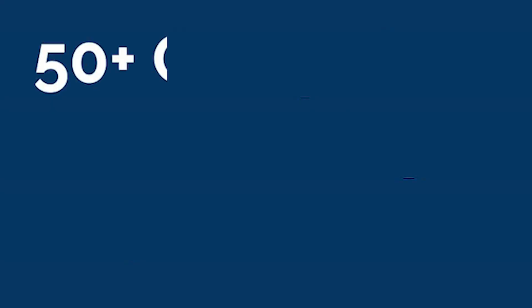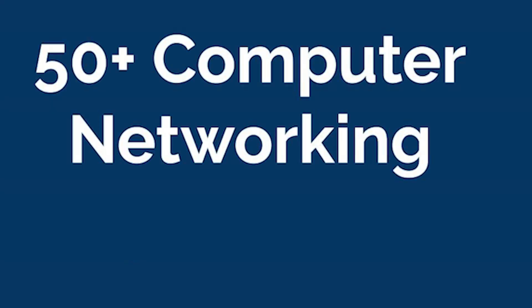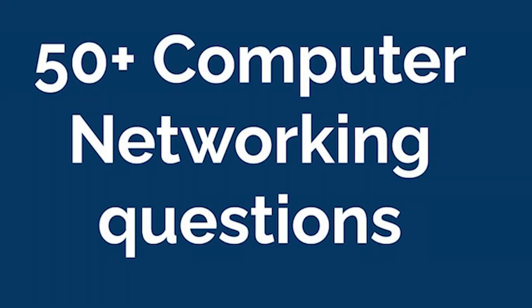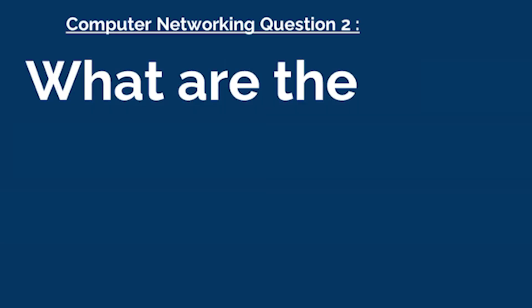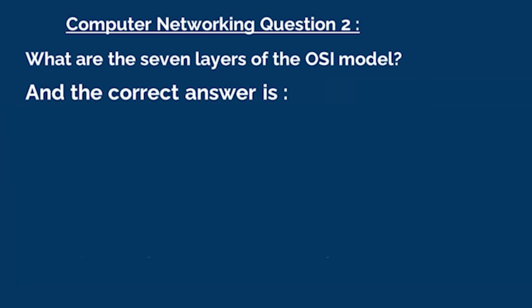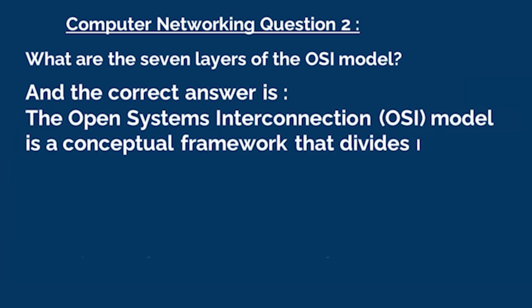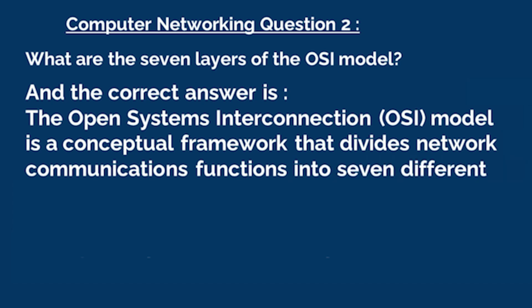Then you will learn 50 plus computer networking frequently asked questions and answers. Please take a look. What are the seven layers of the OSI model? The correct answer is the Open Systems Interconnection Model is a conceptual framework that divides network communications functions into seven different abstraction layers.